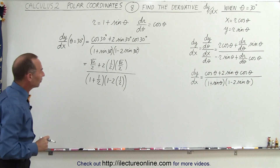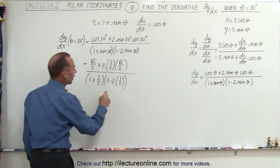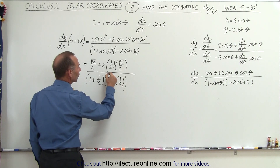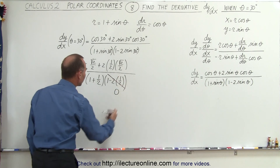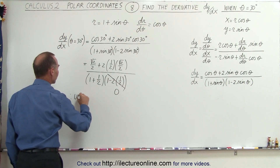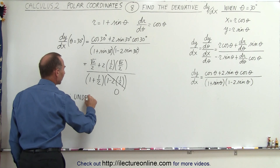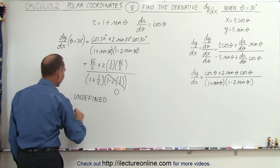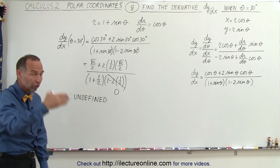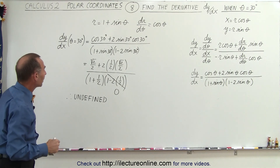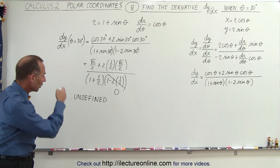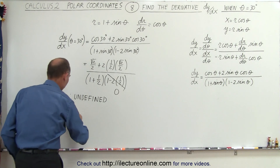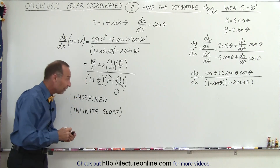Right away, you can see we have a bit of a problem, because here in the denominator, 2 times 1 half is 1, and 1 minus 1 is 0. So the denominator can be replaced by 0, and with 0 in the denominator, we conclude that this function is undefined, which means the slope dy/dx when theta equals 30 degrees is expected to be infinite — in other words, the slope is perpendicular, or parallel to the y-axis. We have what we call infinite slope at that particular angle.